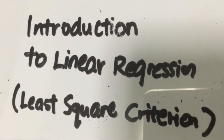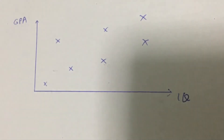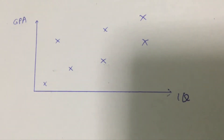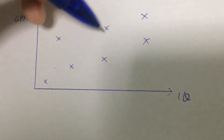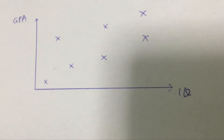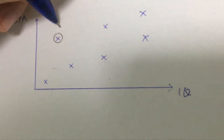The idea of linear regression goes like this. Imagine I've collected a sample of data from students in the university and I want to predict the GPA score of a student based on their IQ. As you can see, all these crosses are the data collected from the students — what we know as the observed data.